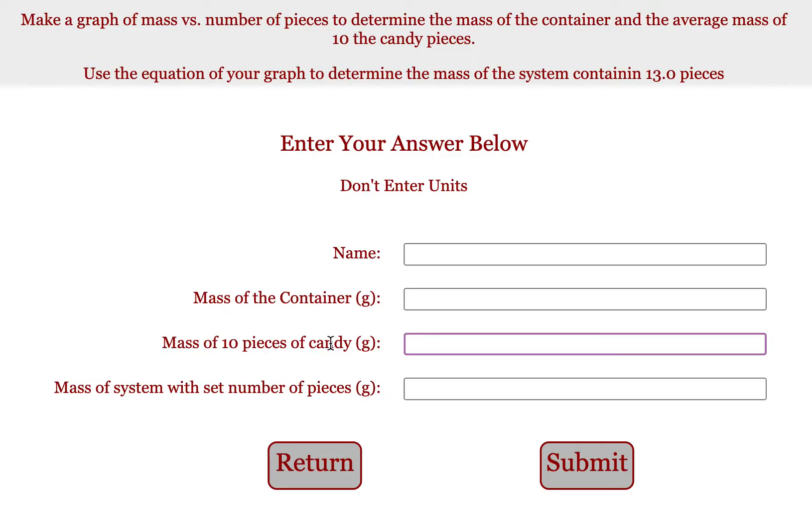That's without the container. Just 10 pieces of candy. What's that mass like? And then I want the mass of the system with a set number of pieces. And that number is randomly generated and will be given to you at the top. So for me, it's 13 pieces of candy.